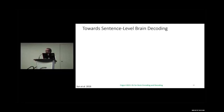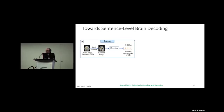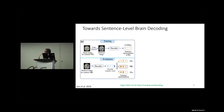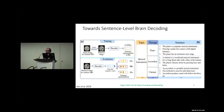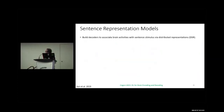Moving to sentence-level brain decoding: this work is mostly similar to Pereira's but uses sentence-level representations rather than word-level. The decoding schematic is the same — informative voxel selection and ridge regression — but here nine distributed sentence representation models are used. These are sentence-based models that produce a sentence representation directly, not just the average of word representations from GloVe.